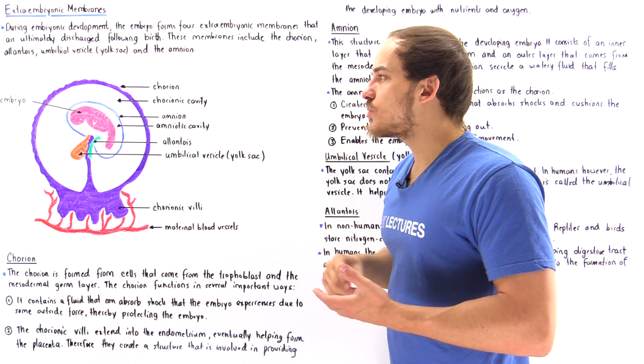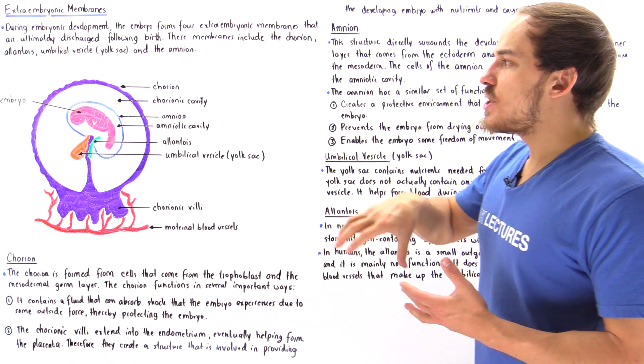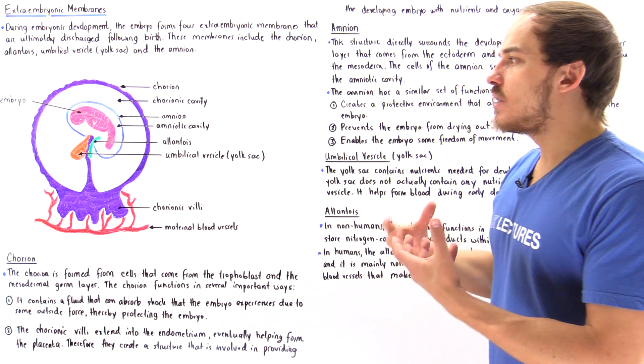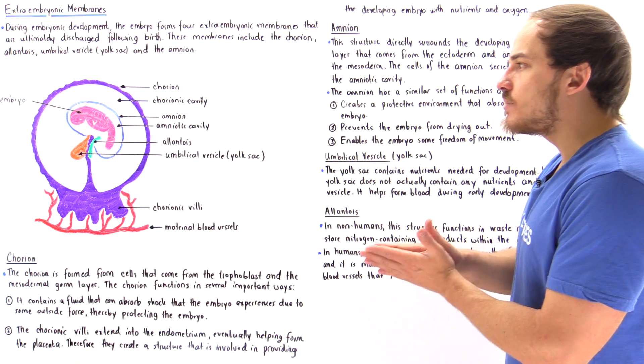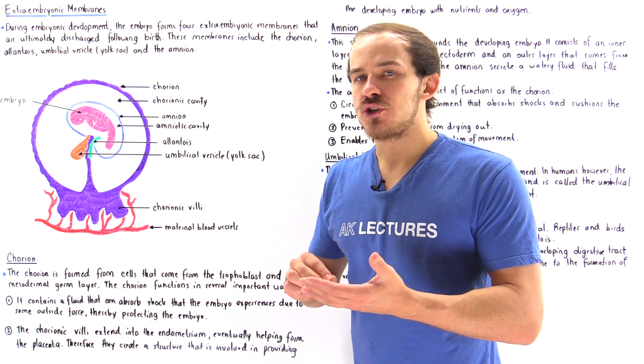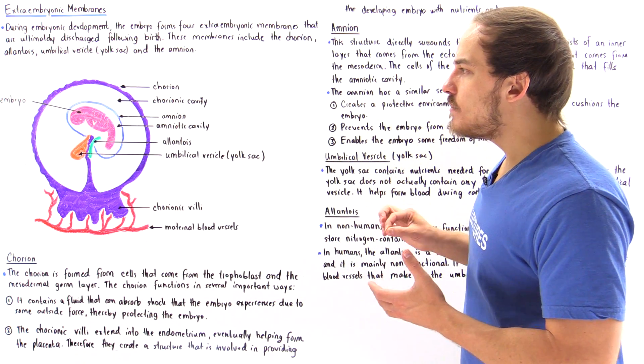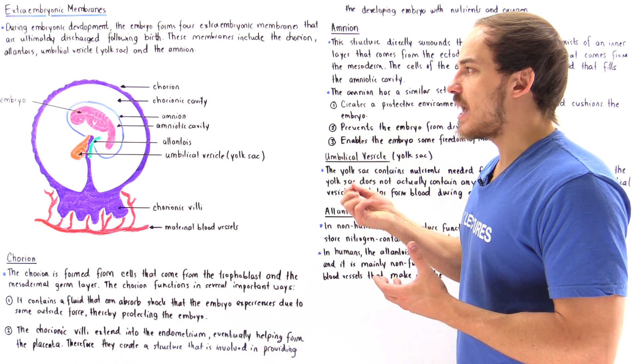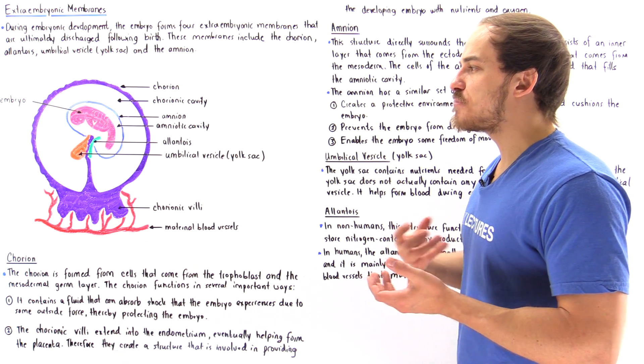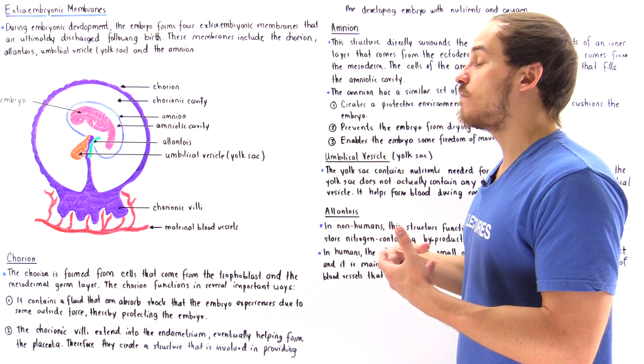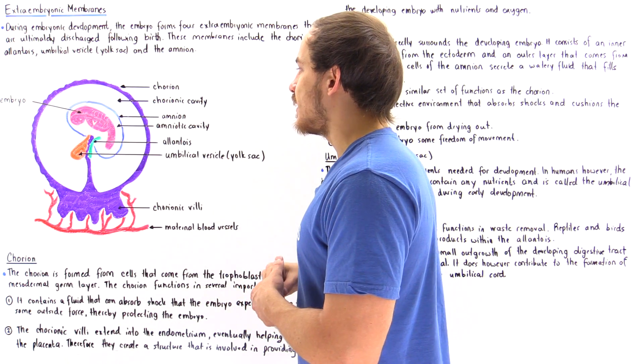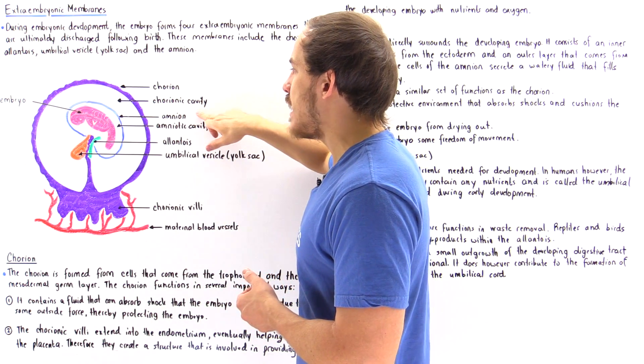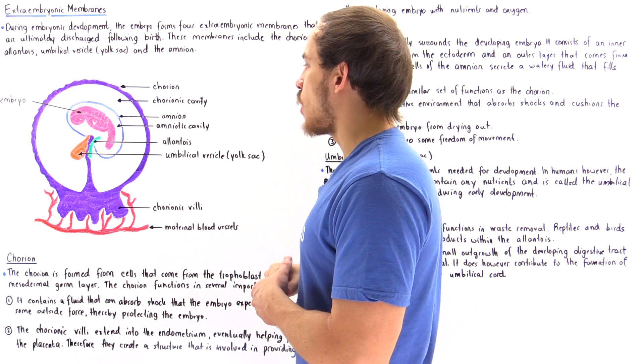Now the amnion actually consists of two layers. The outer layer is the layer that comes from the mesoderm germ layer, but the inner layer comes from the ectoderm germ layer. Now the cells of the amnion produce a special type of watery fluid that is released into the amniotic cavity, the space between the amnion itself and that growing embryo.